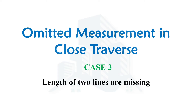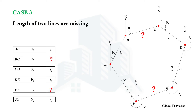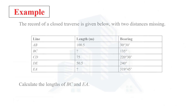Hello everyone. In this video we are going to discuss case number three of omitted/unknown closed traverse when the length of two lines are missing. We have a closed traverse with six lines where the length of BC line and length of EF line is missing. Since this is a closed traverse, we have the advantage that the summation of all departures and summation of all latitudes is equal to zero, and using those expressions we can calculate these lengths.